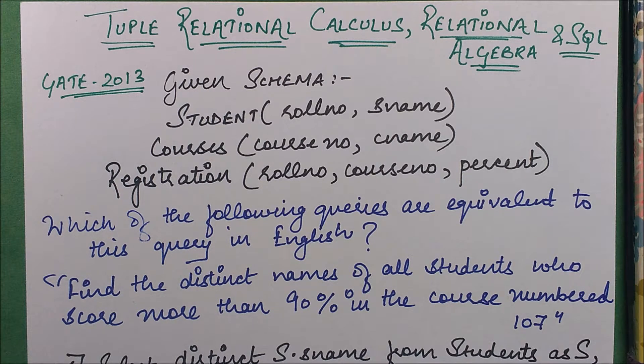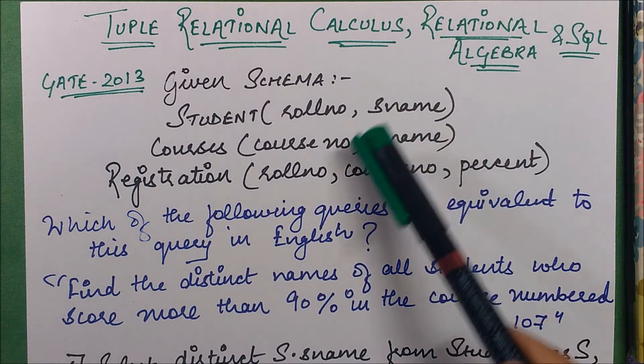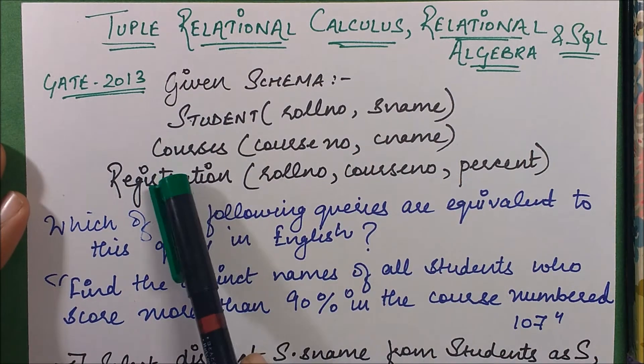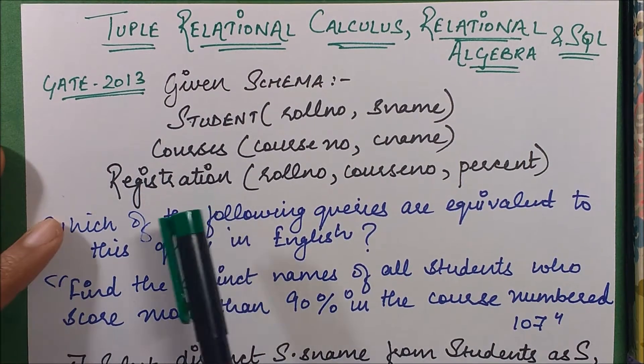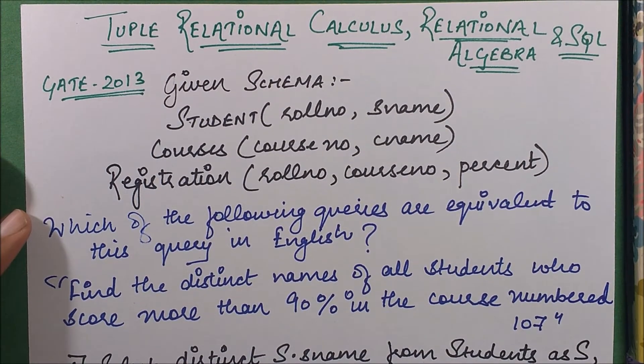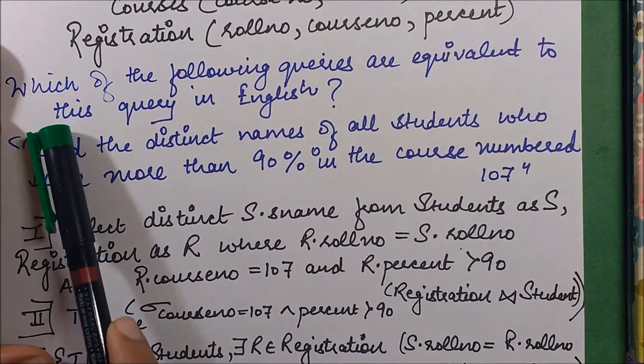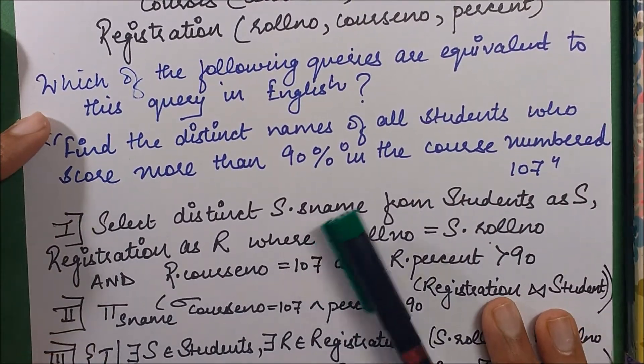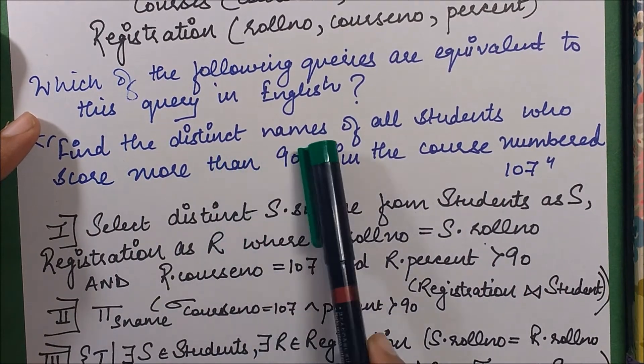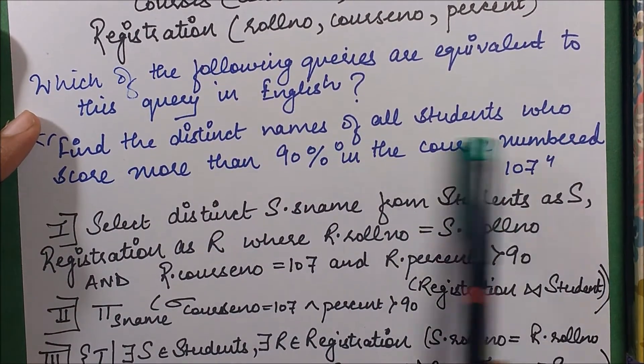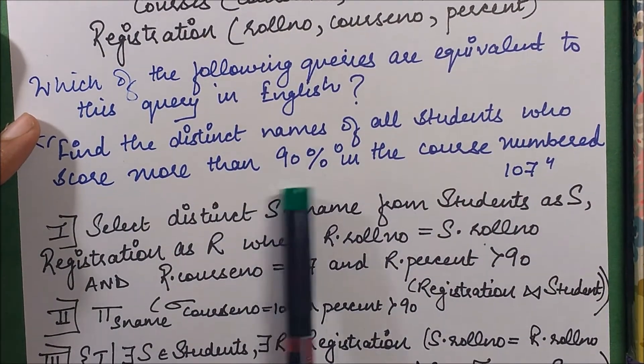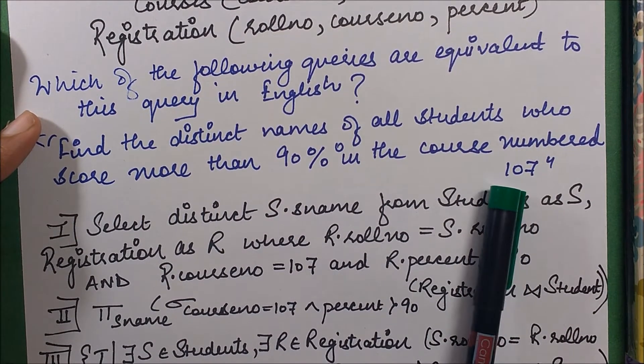Hello friends, in this session let's take up a question from GATE 2013 dealing with tuple relational calculus, relational algebra, and SQL. In this question we've been given three schemas: Student, Courses, and Registration. The question is: which of the following queries are equivalent to this query in English?